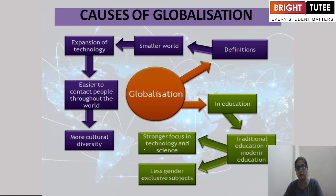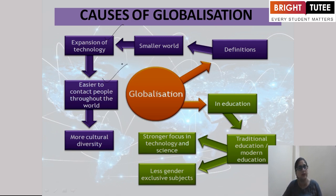Now what are the causes of globalization? Globalization makes the world smaller and it expands technology. It is easy to contact people throughout the world. Nowadays we use mobile phones, Skype, social media, WhatsApp, internet, and email — so it is very easy to contact people throughout the world in seconds. And there is more cultural diversity; people are interchanging cultures, so it is migration of culture too.